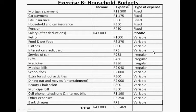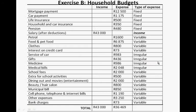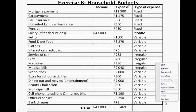Clothes are variable, interest on a credit card is variable. Service of a car is an irregular expense. Medicine is irregular and medical bills are irregular. School fees can be variable or fixed — it depends. Most school fees are fixed but can also be variable. Extra for school activities is variable. Dining out and movies: variable. Beauty and hair salon: variable — this can even be irregular.